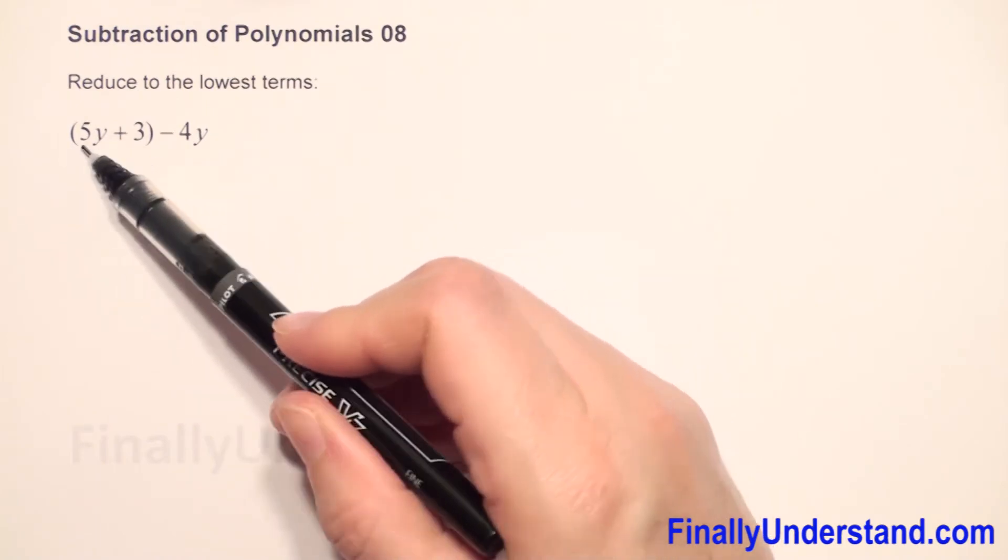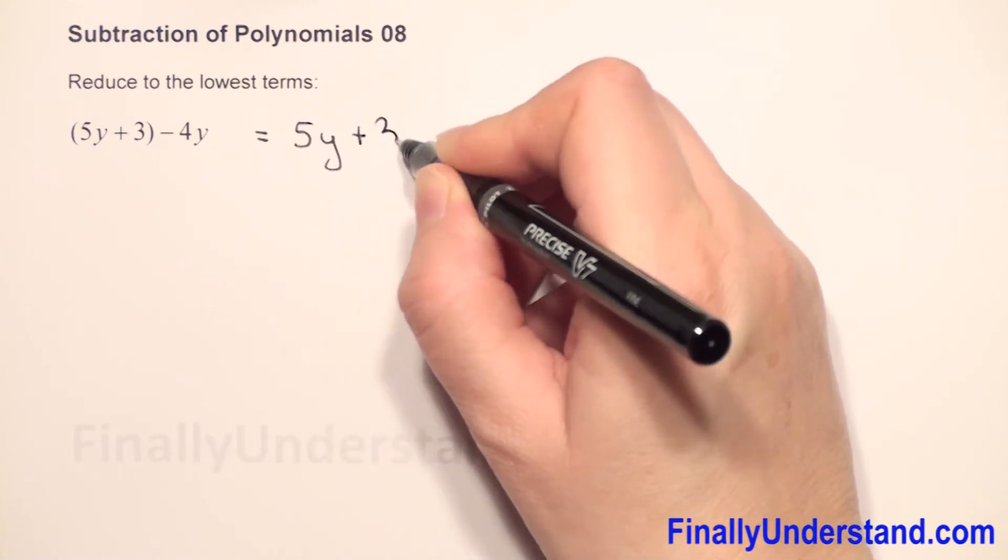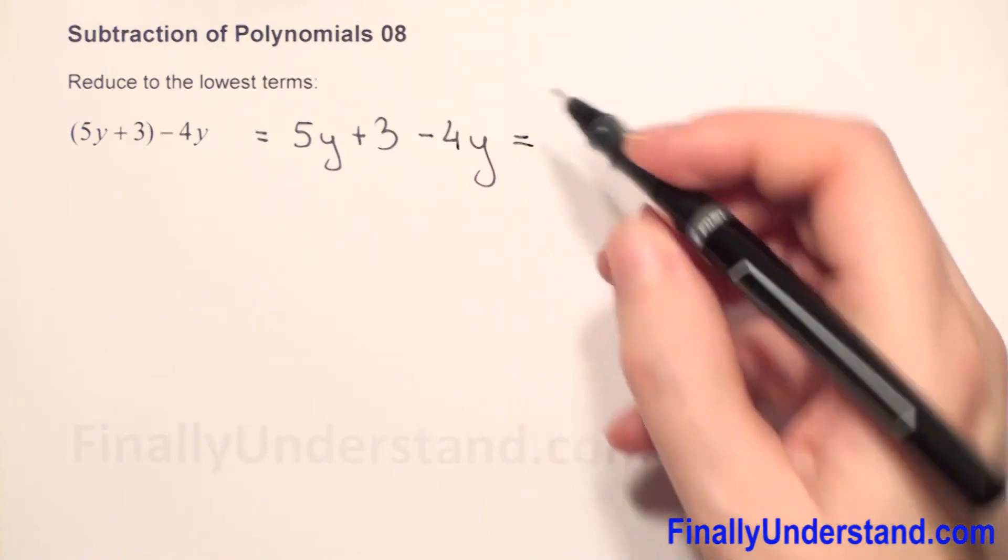Copy whatever we have inside the parenthesis. So this equals 5y plus 3, and we have minus 4y. Now we have to combine the like terms.